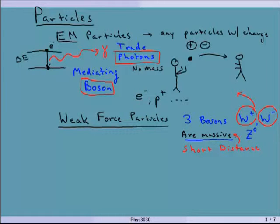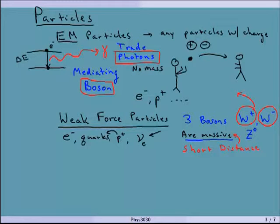The weak force particles include the electron, quarks (which make up the proton), and neutrinos. The neutrino symbol is ν — there are different kinds, like the electron neutrino. Neutrinos take part in the weak force and interact with electrons, but neutrinos really only interact weakly — they have no charge so they don't interact with the EM force, and they do not interact with the strong force either.